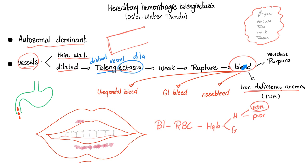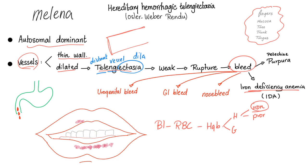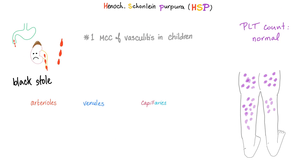Nose bleed — possible. GI bleed — possible and common. Urogenital bleed — also can happen. So please remember: hereditary hemorrhagic telangiectasia is autosomal dominant, vessels are weak, I bleed in my lips — very common — and GI bleed. When there is GI bleed, there is dark stool. And when there is dark stool, there is a positive stool guaiac test.